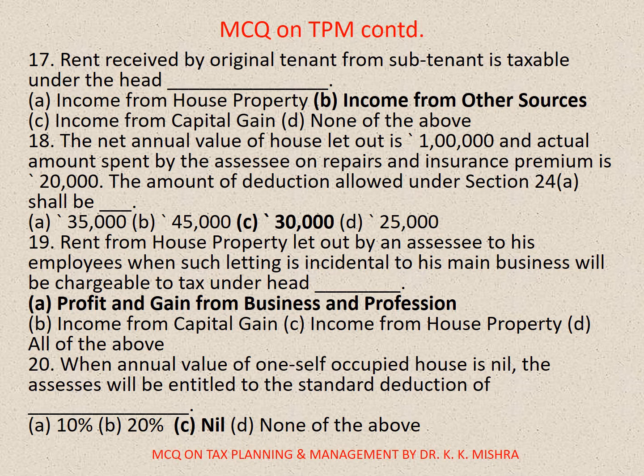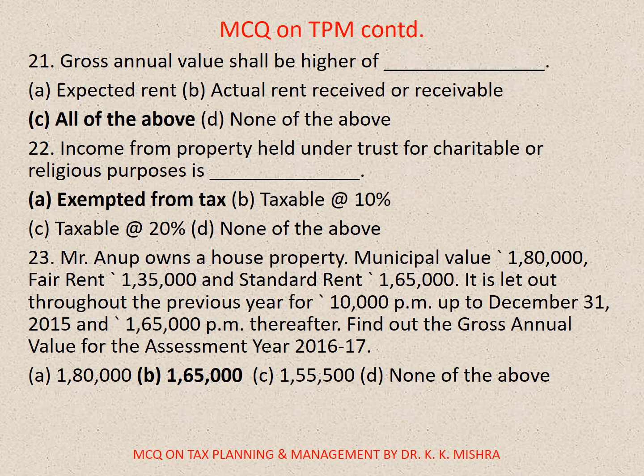Question number 20: When the annual value of one self-occupied house is nil, the assessee will be entitled to the standard deduction of — correct option is C: Nil. Question number 21: Gross annual value shall be the higher of — A. Expected rent, B. Actual rent received or receivable, C. All of the above, D. None of the above. Correct option is C: All of the above.